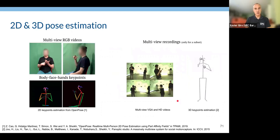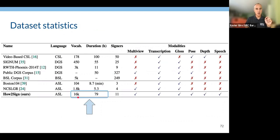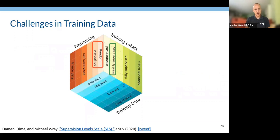How2Sign also includes 3D poses from the Panoptic Studio recordings and 2D poses from OpenPose — which are somewhat noisy but represent state of the art. We also have English-to-Brazilian Portuguese translation alignment from the How2 dataset. If you're working on sign language, we invite you to use How2Sign.